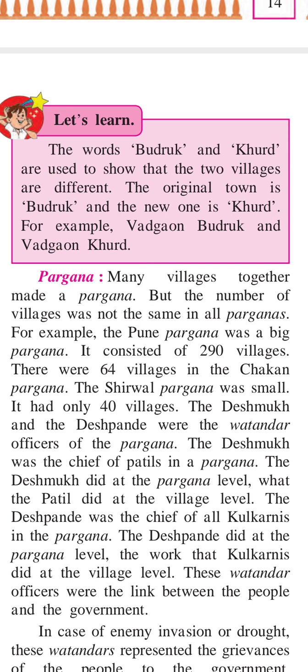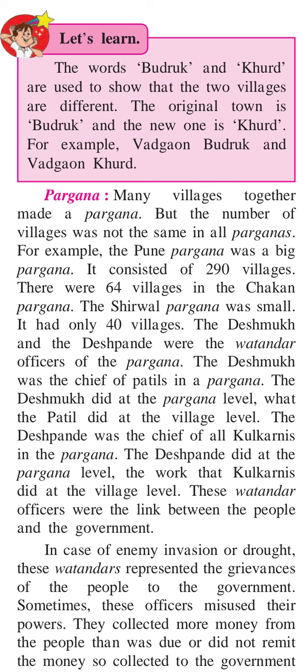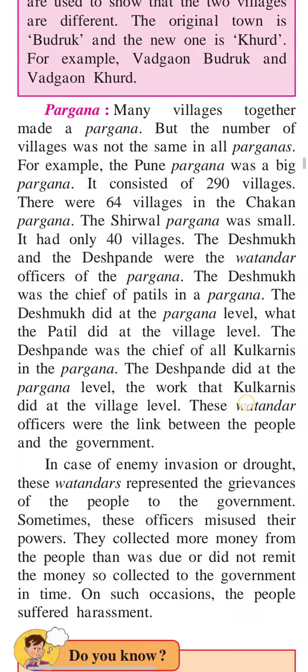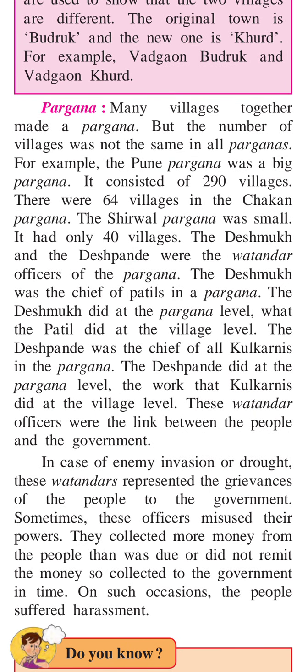The Deshpandes served as the link between the people and the government. All these people — Deshmukh, Patil, and Deshpandes — were the mediums connecting the people to the government. In cases of enemy invasion or drought, these Deshpandes represented the grievances of the people to the government. They also collected revenue from the people and remitted the money to the government.